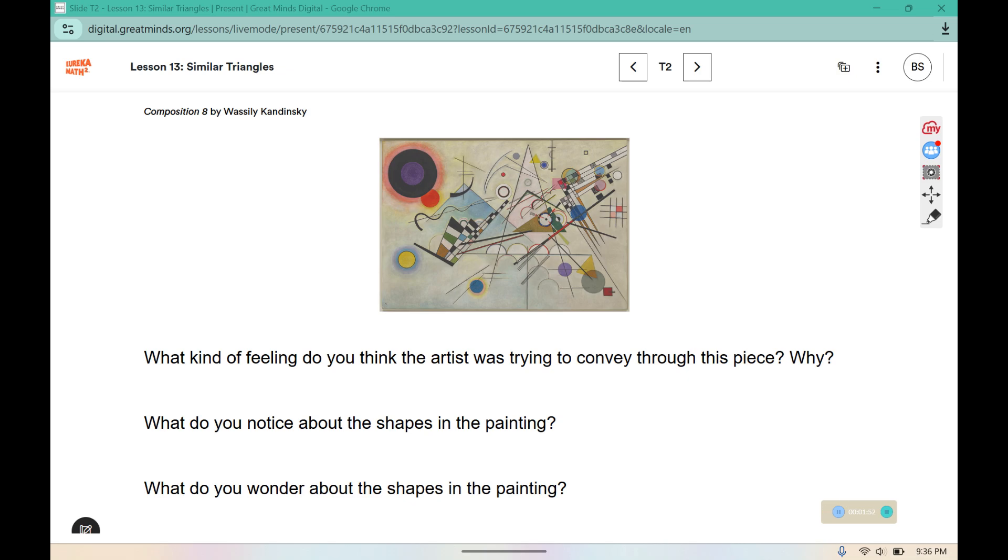What do you notice about the shapes in the painting? We see several circles, a few triangles, some squares. You can see with the circles that they might be considered dilations or similar figures. You could also see that these squares could be obtained by rigid motions. These arcs could also be considered similar or congruent based on rigid motions.